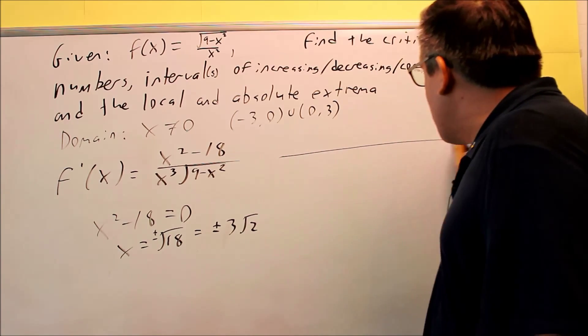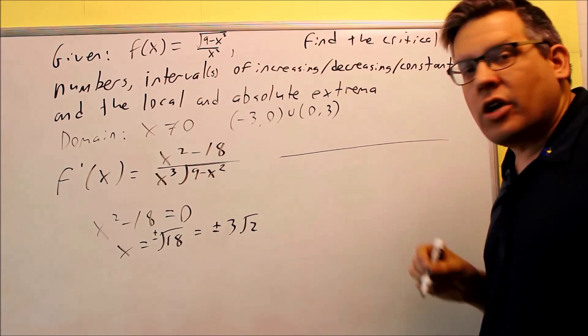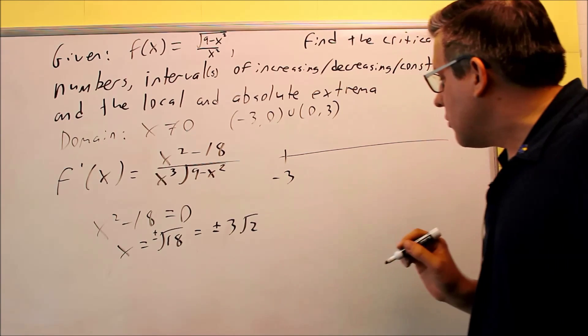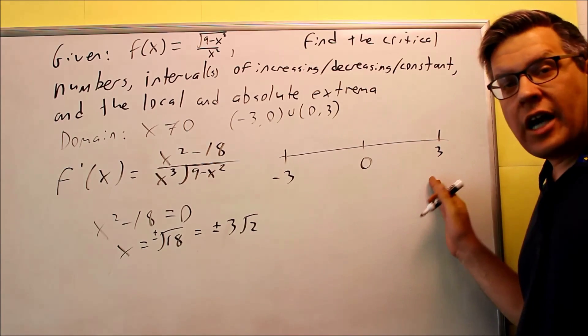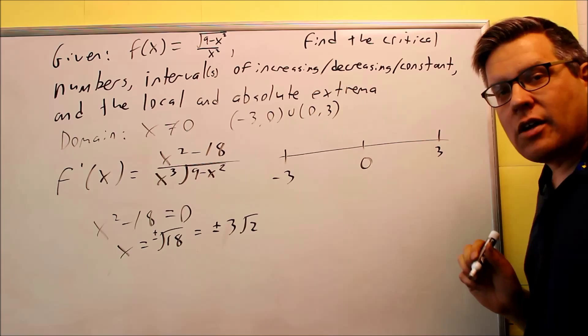So the question is, well, how do we set up our table? What numbers do we know how to put on there? They're going to come directly from this right here, directly from your domain. We have a negative 3, we have a 0, and we have 3. We're not allowed to test any numbers outside of this domain, so we have to stick to just these two inside here.